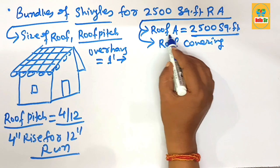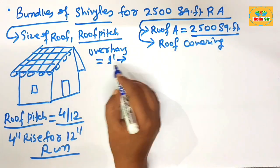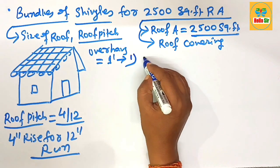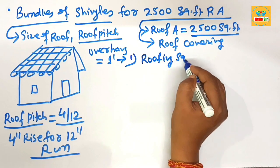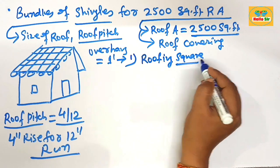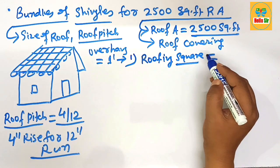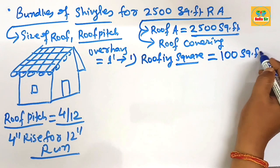And here you have the dimension for roof area is 2500. First we figure out the roofing square. What do you mean by roofing square?